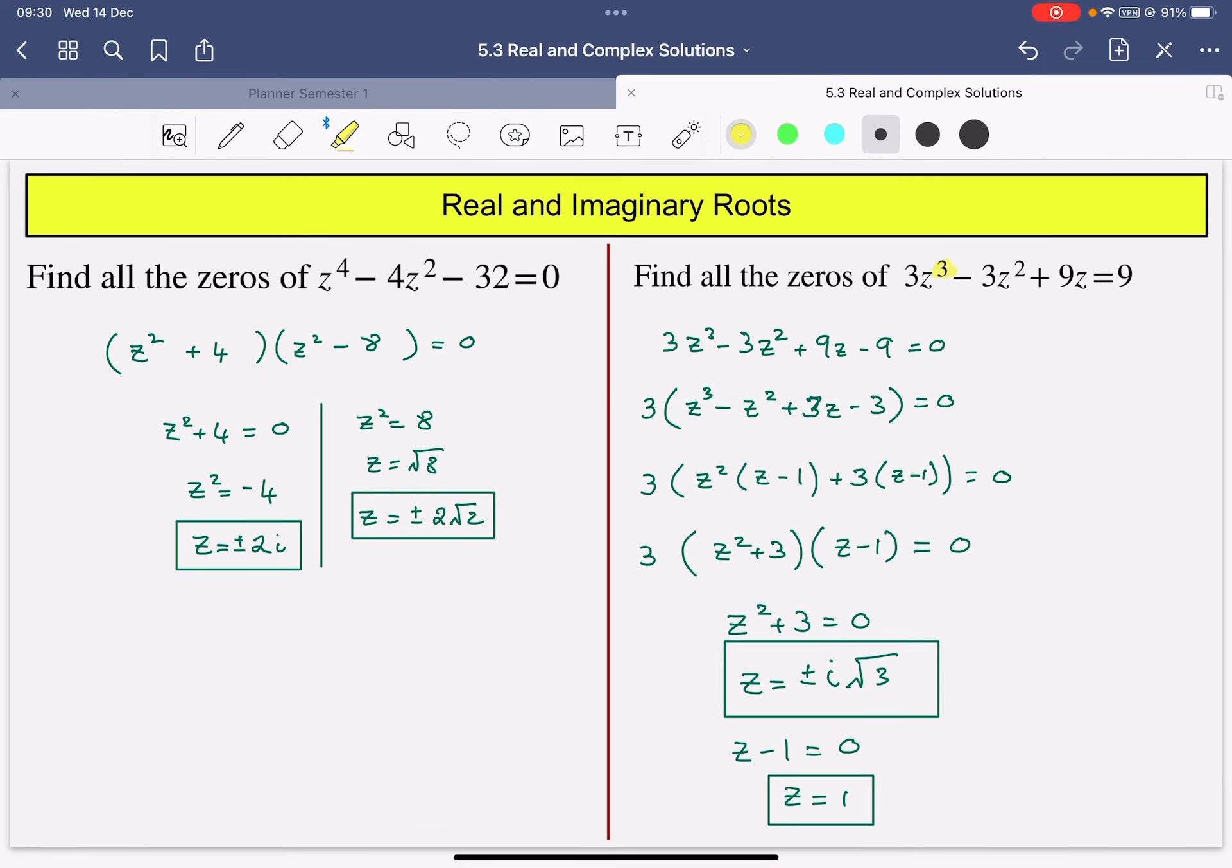So we can always do them by doing hidden quadratics or perhaps they are a difference between cubes, sum of cubes, difference of cubes. Or maybe they're just one like I've just done where we have to do the factor by grouping.